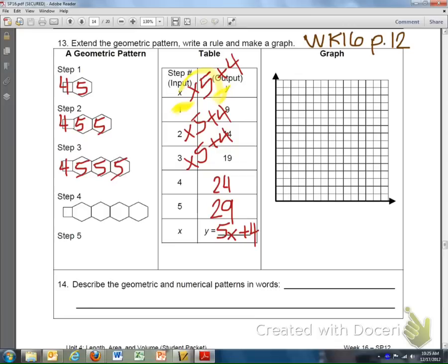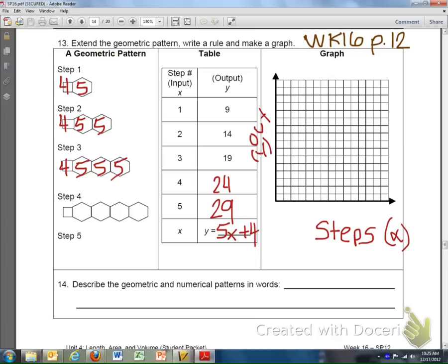So we're pretty much done with that section on coming up with the rule on how to get from the input to the output. We then now want to take a look at the graph, and we want to plot some points in order to look at the pattern. On our bottom, we have our x's, and that's our steps. And then we have our outputs. This is our y.